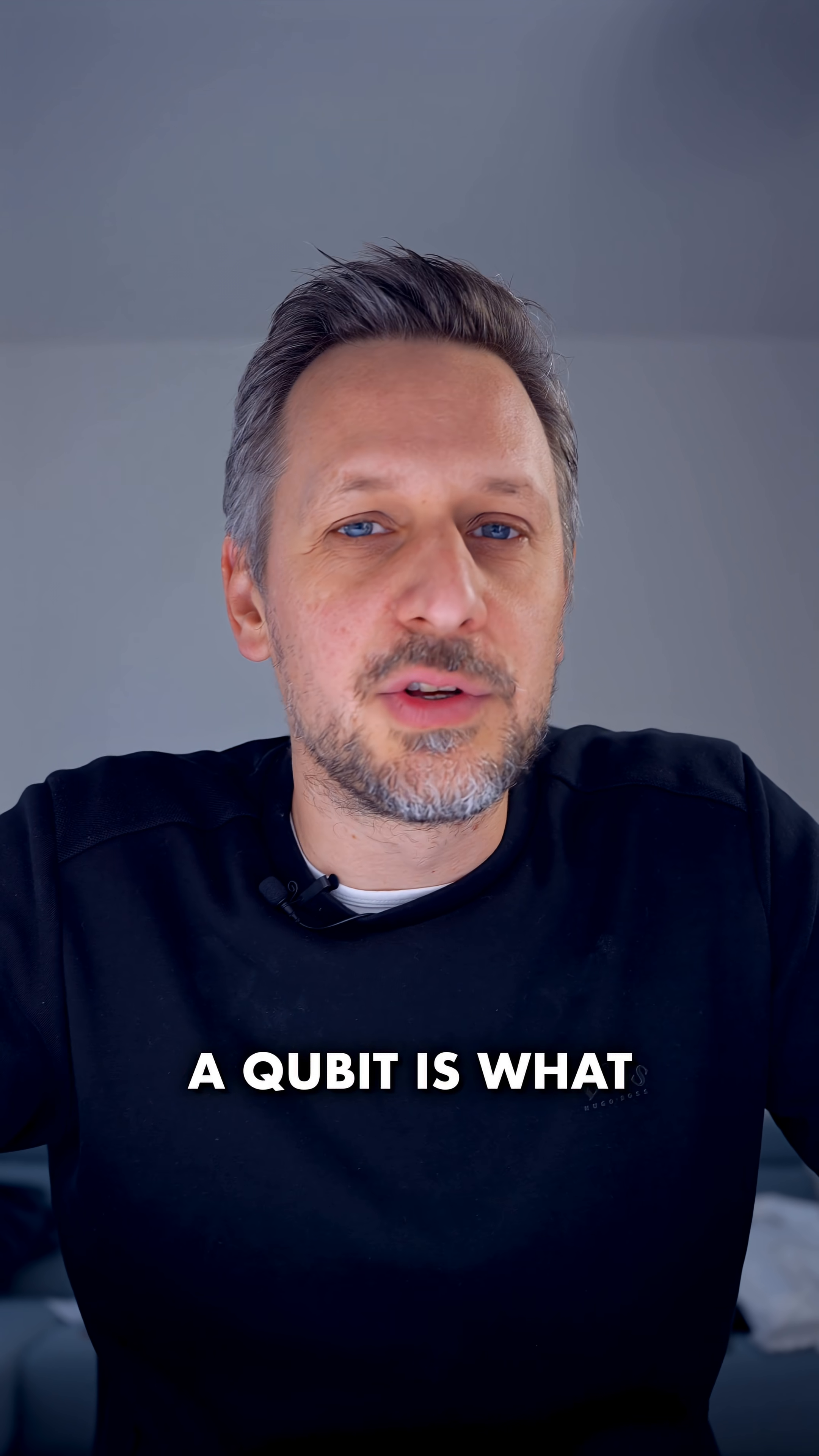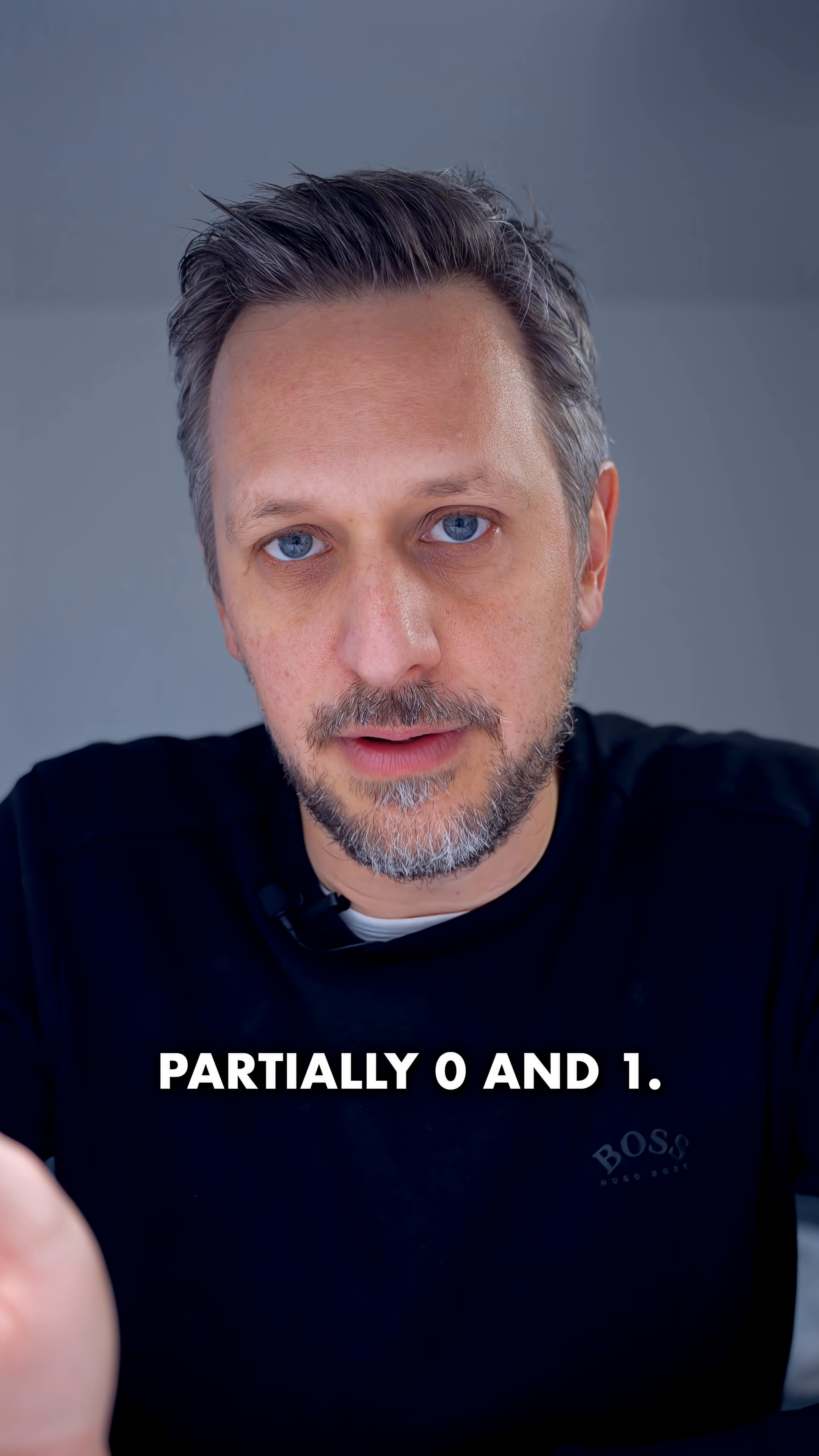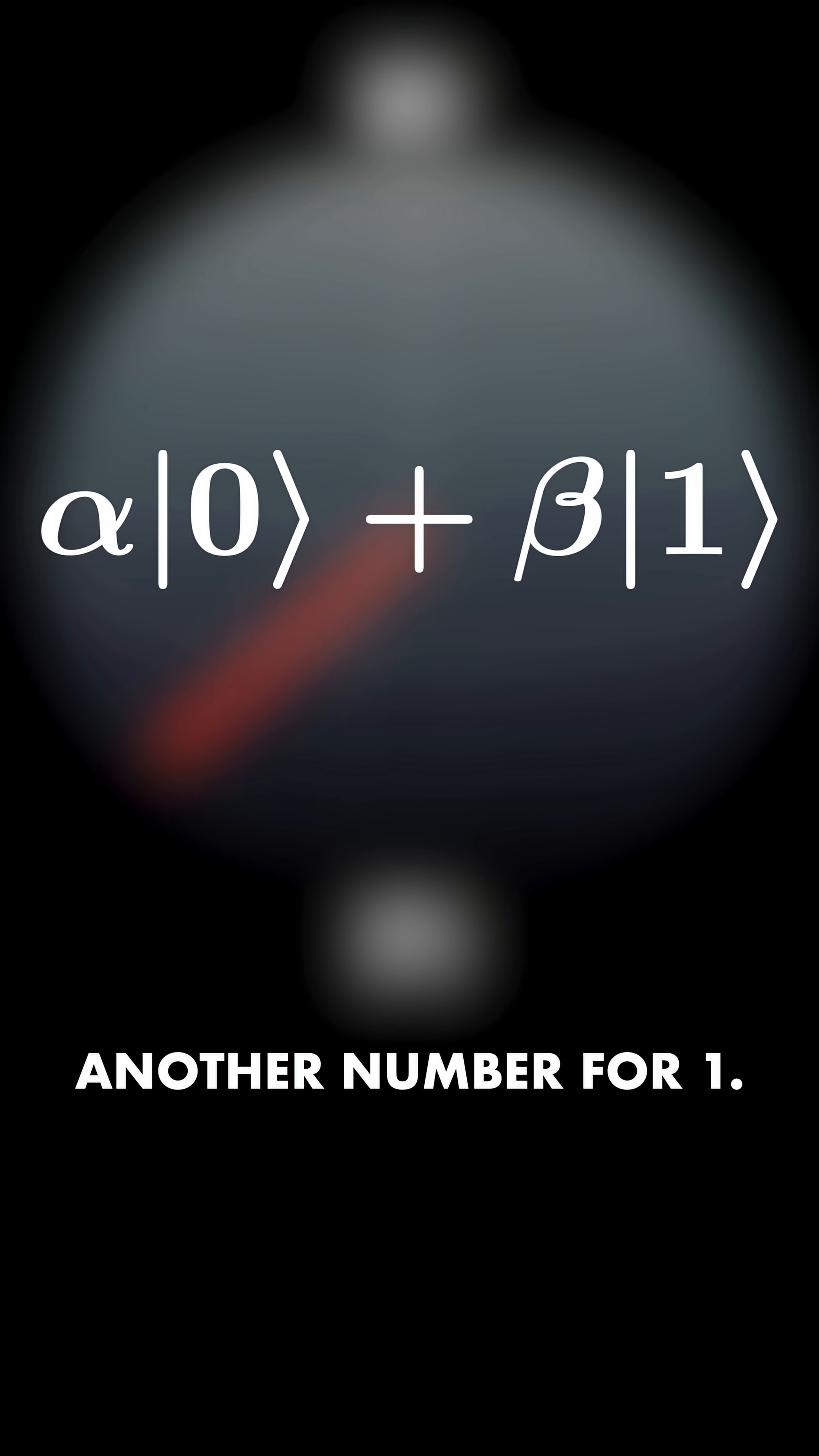A qubit is what quantum computers use instead of bits. The main difference is that a qubit isn't just zero or one, but can be partially zero and one. This mixture can be described by a direction in state space. This is zero, this is one, and anything in between is a combination. Meaning, we need a number for zero and another number for one.